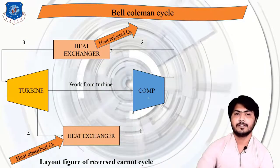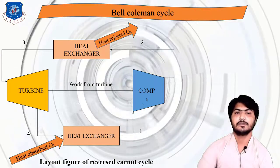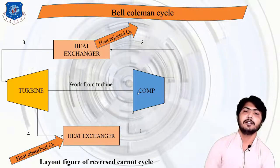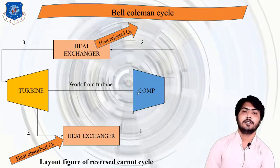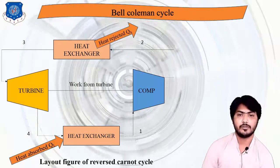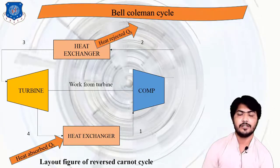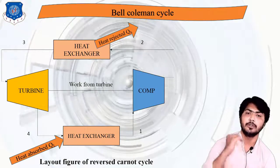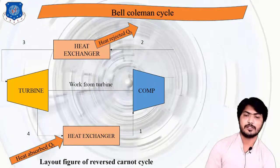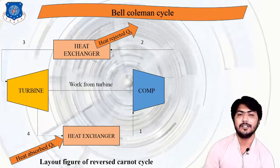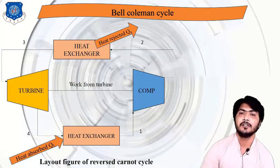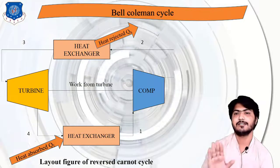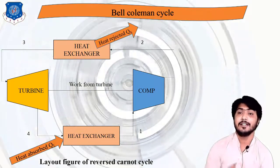In process 1 to 2, isentropic compression means entropy is constant: S1 = S2, and pressure increases from P1 to P2. We apply the Steady Flow Energy Equation (SFEE) to all devices — compressor, heat exchanger, turbine, and heat exchanger.